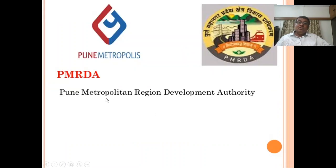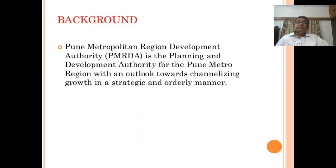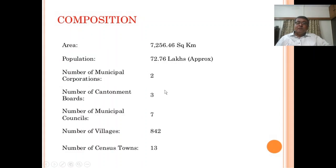Now let's see about PMRDA — Pune Metropolitan Regional Development Authority. PMRDA is the planning and development authority for the Pune Metro Region, with an outlook towards channelizing growth in a strategic and orderly manner. Composition: area about 7,256 square kilometers; population about 72.76 lakhs; 2 municipal corporations; 3 cantonment boards; 7 municipal councils; 842 villages; and 13 census towns.